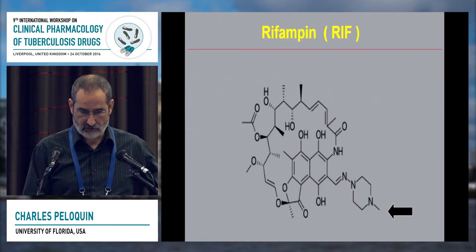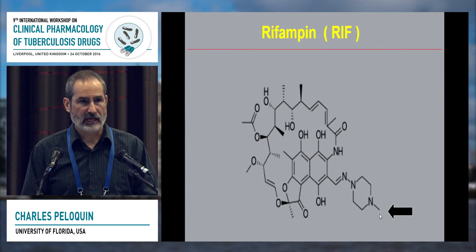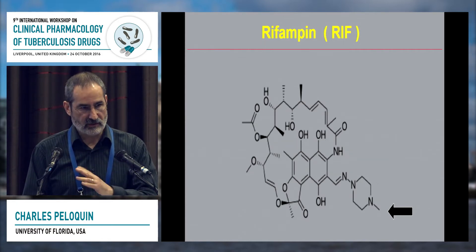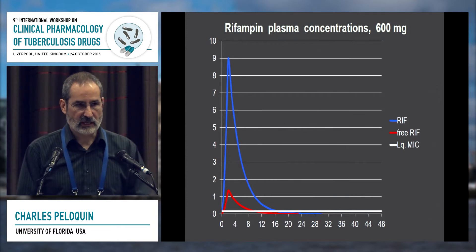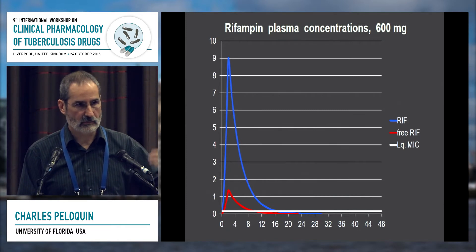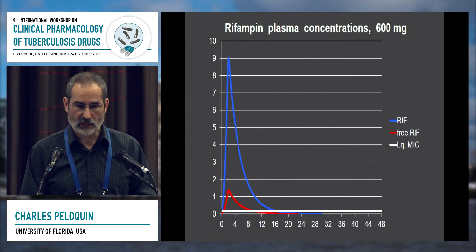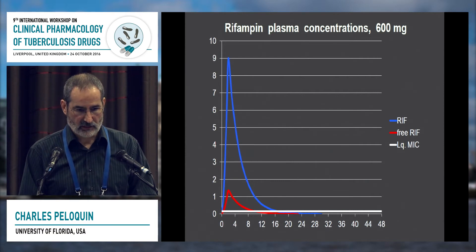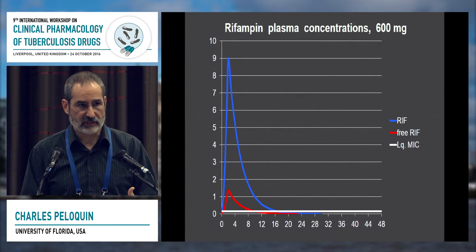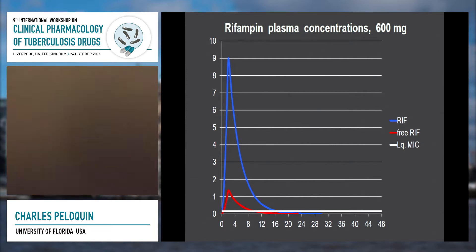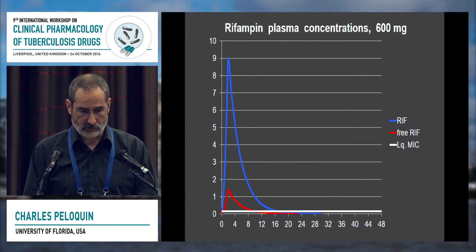Rifampin has a small methyl group at the end of this particular portion of the molecule, and that's where the difference is with rifapentine. These are the serum concentrations — anywhere between 8 to 24 would be a reasonable peak concentration for rifampin. In this slide, I have a peak of 9, and then in red, the free drug concentration, which is roughly 15% of the total peak concentration.